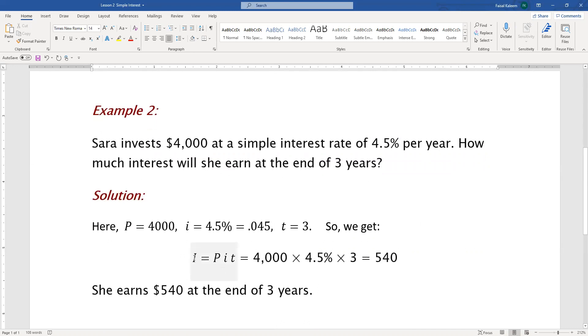I = Pit = 4,000 × 4.5% × 3. Since 4.5% is 0.045, when you multiply 4,000 × 0.045 × 3, you get 540. She earns $540 at the end of 3 years.